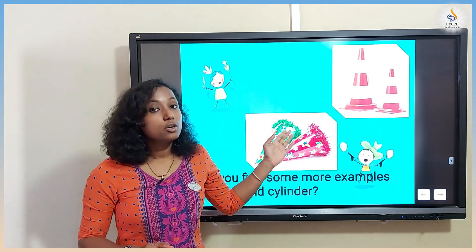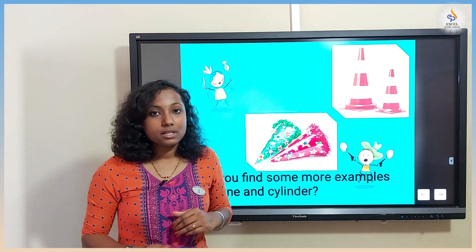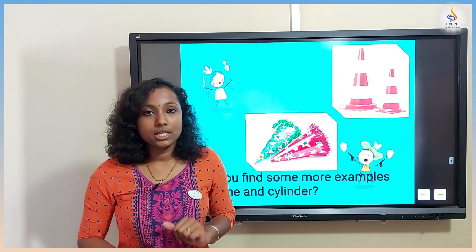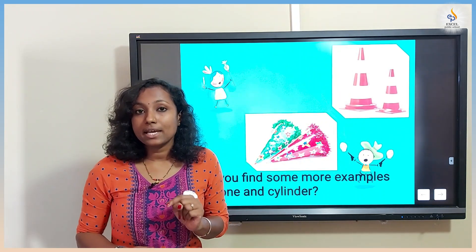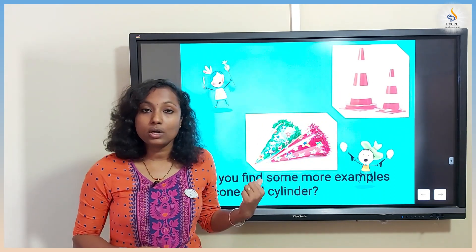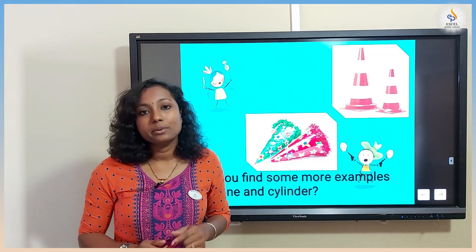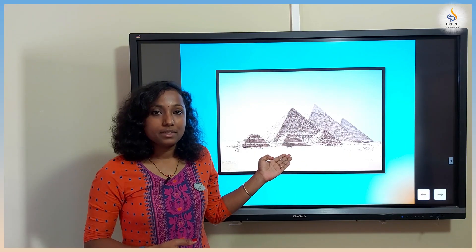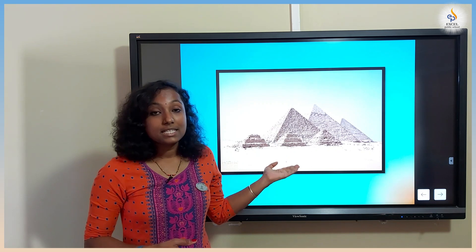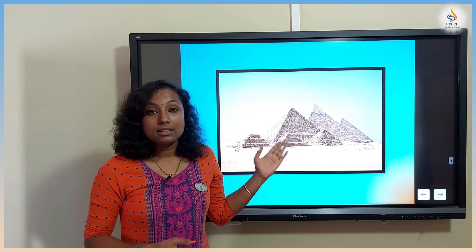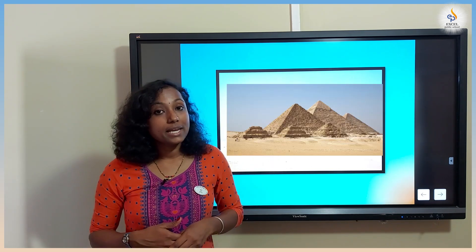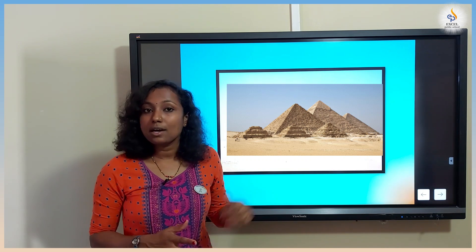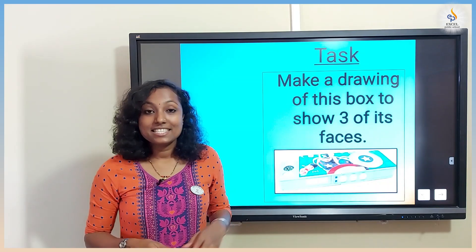Now let's look at some examples for cone. I have given only two examples for each shape. Can you find out some examples for cone and cylinder and share with us? Kids, look at this picture — this is an Egyptian pyramid. This is also an example for a 3D shape, and we call it a pyramid.